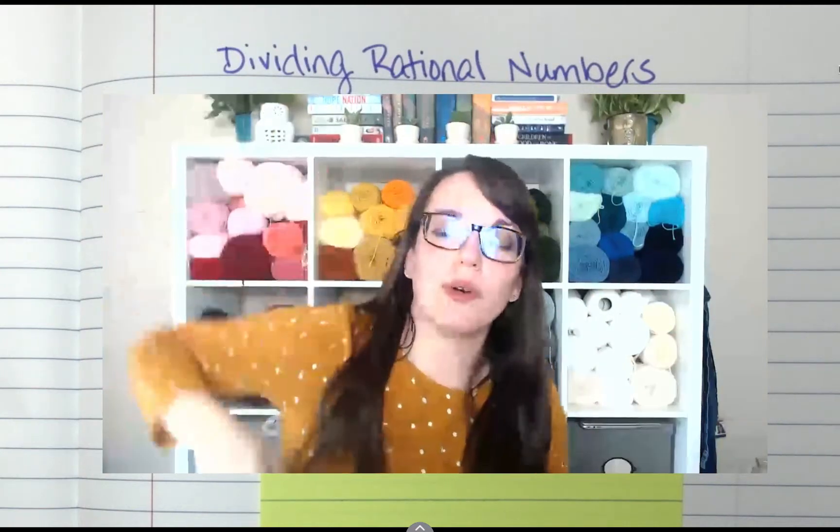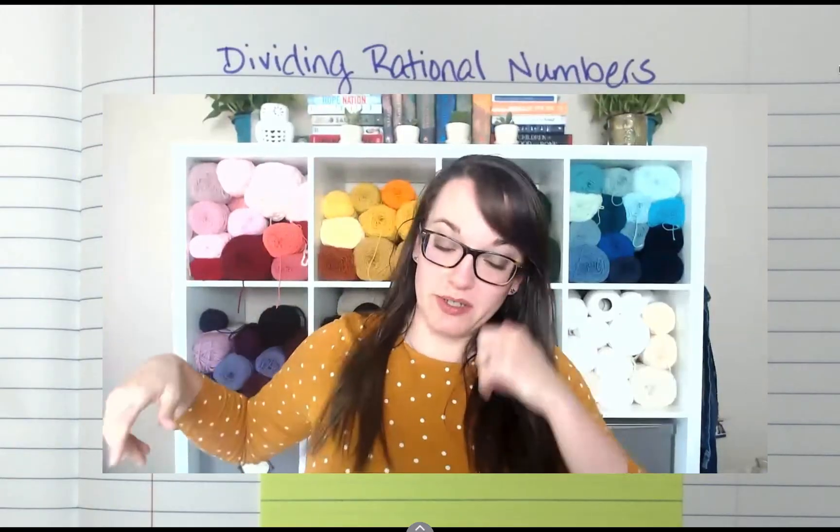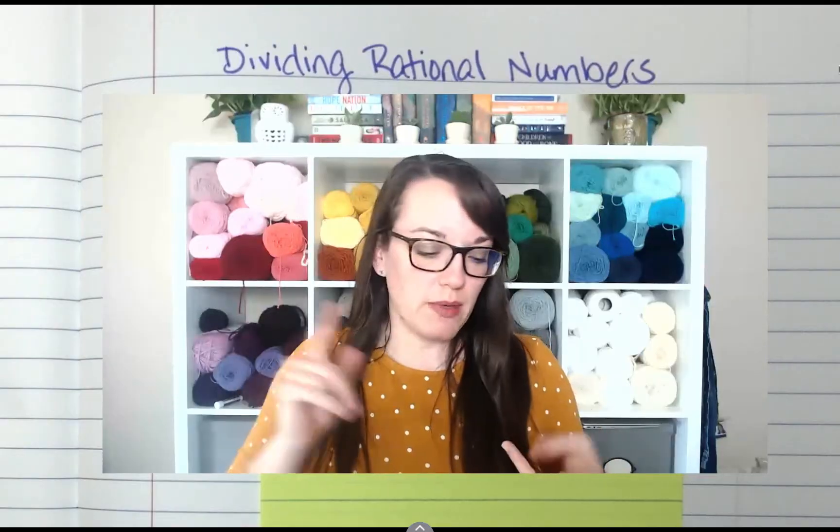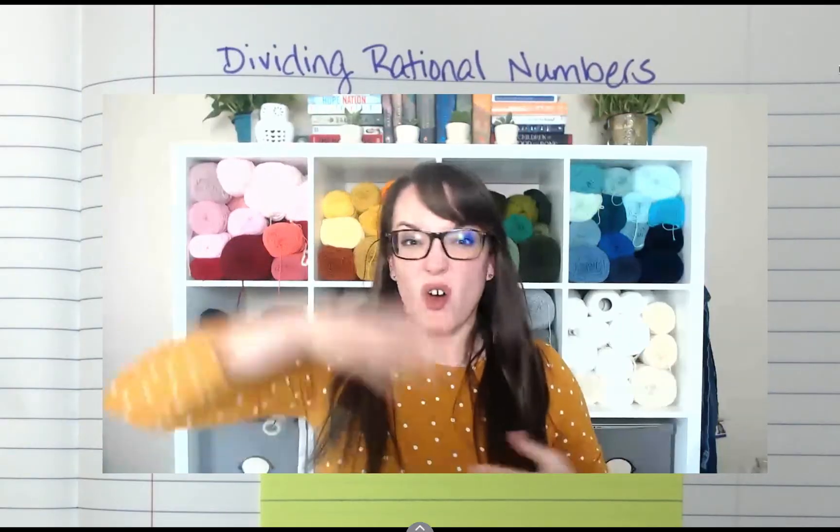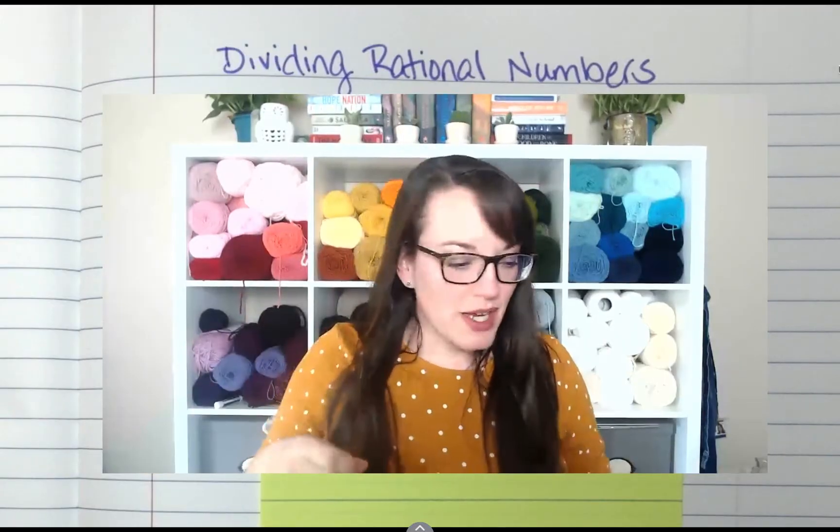Hey everybody, welcome back. Today we're going to talk about dividing rational numbers. We already know that rational numbers mean fractions, decimals—they can be positive, they can be negative. It's all the above. You could have a positive fraction multiplied by a negative decimal. That's rational numbers, except dividing, not multiplying. Multiplying was last time.